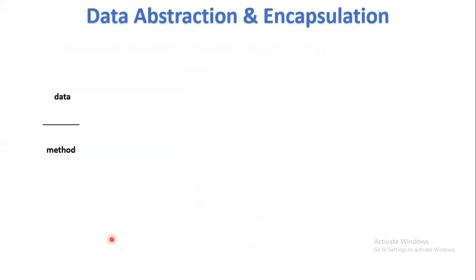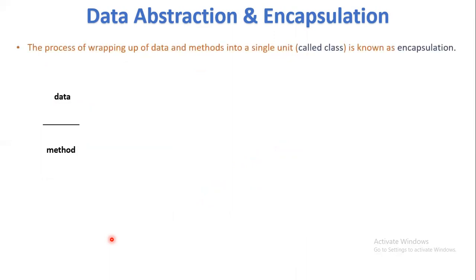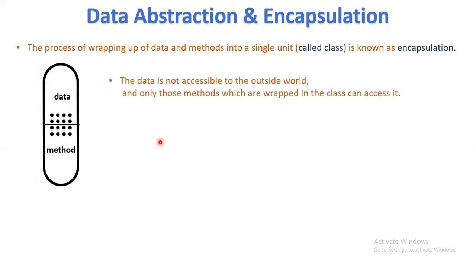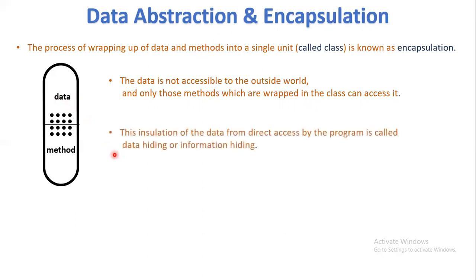The next principles are data abstraction and encapsulation. Data encapsulation means the process of wrapping up data and methods into a single unit — that unit is called a class. The advantage of making a single unit is that the data is not accessible to the outside world; only those methods wrapped in the class can access it. This provides security to the data. The isolation of data from direct access by programs is called data hiding or information hiding.